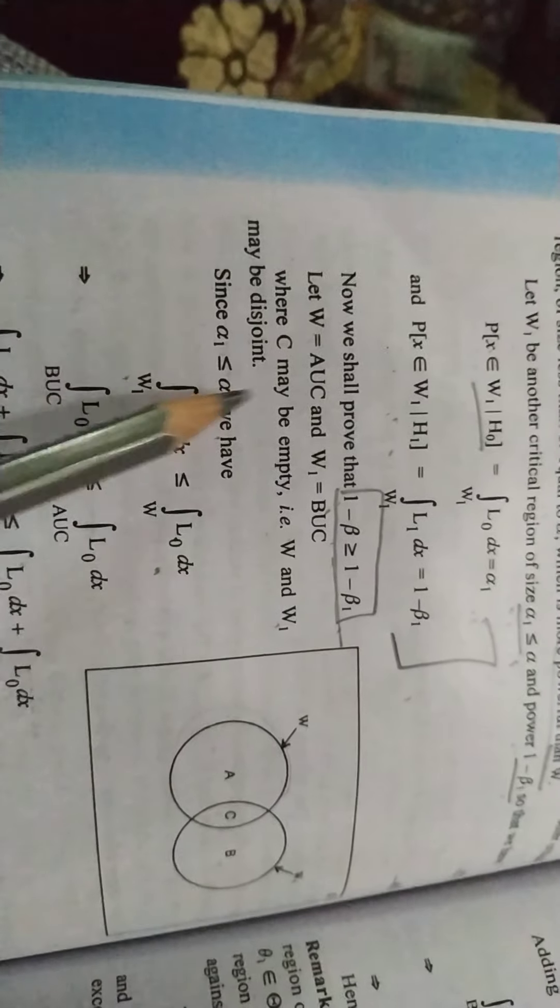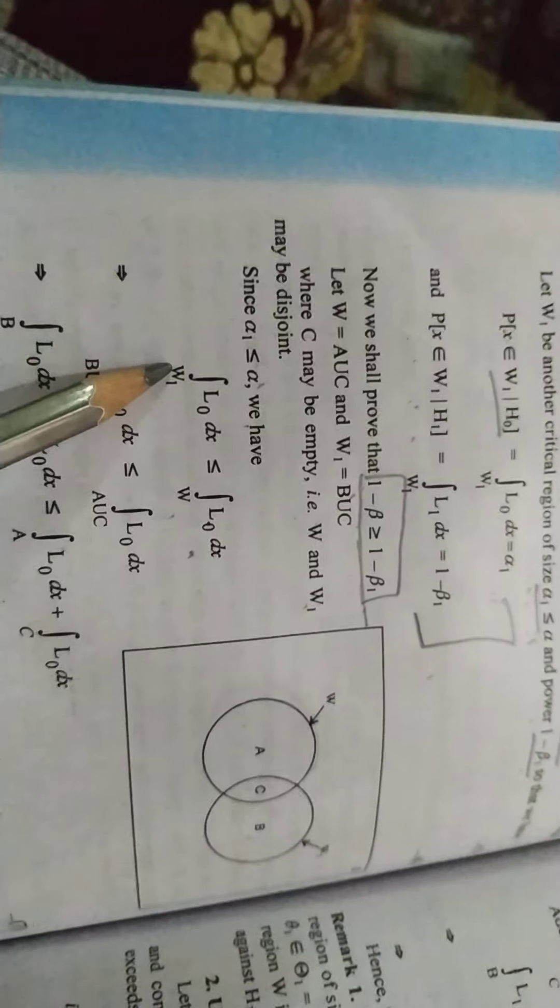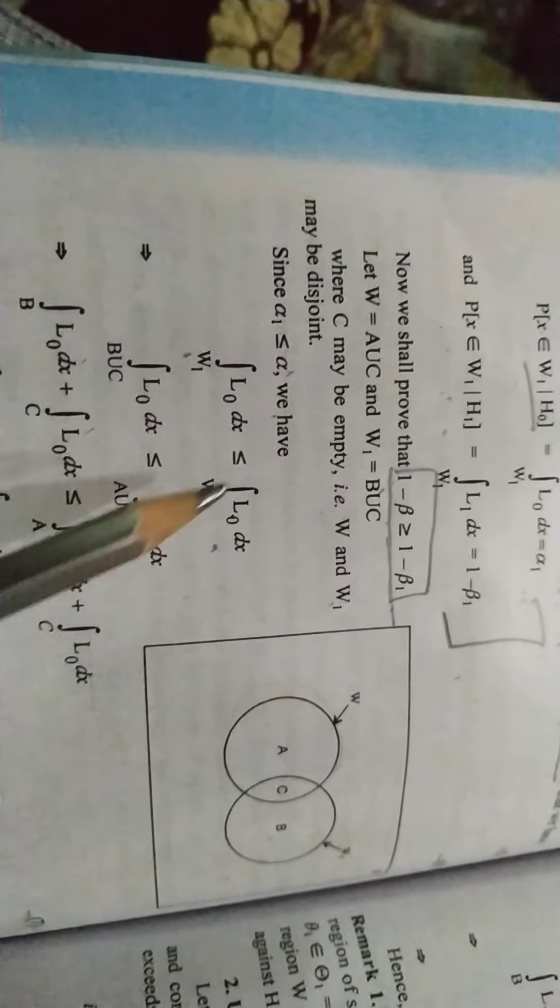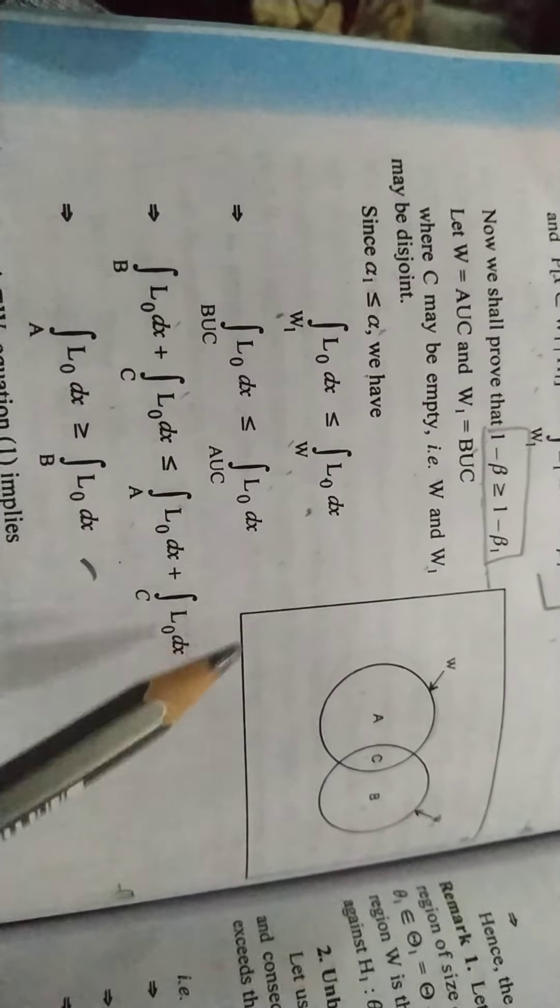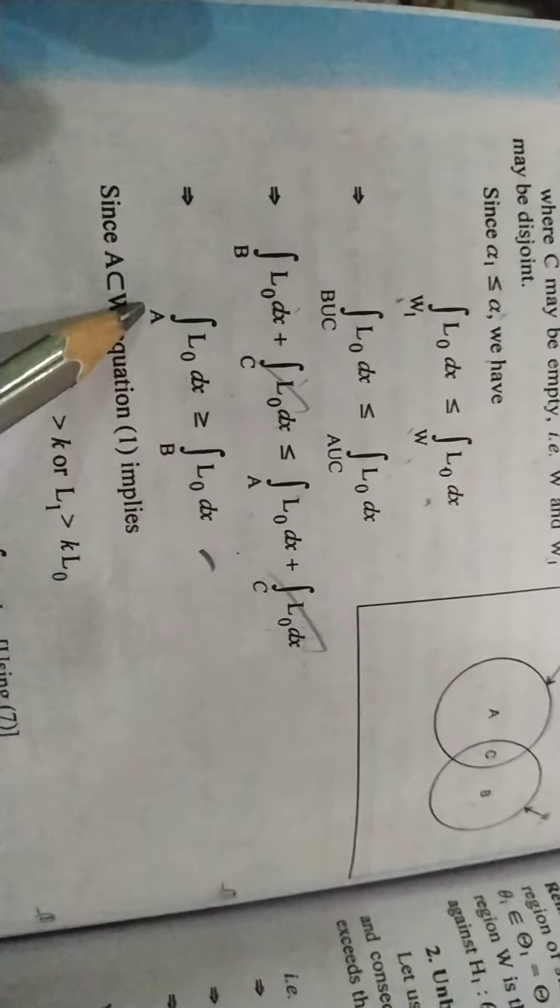Now alpha1 is smaller than alpha. So L0 will be small from L0, because alpha1 region is W1, alpha region is W. W1 means B union C, W means A union C. This is B plus C, A plus C. So this is cut out. Now we have equation.